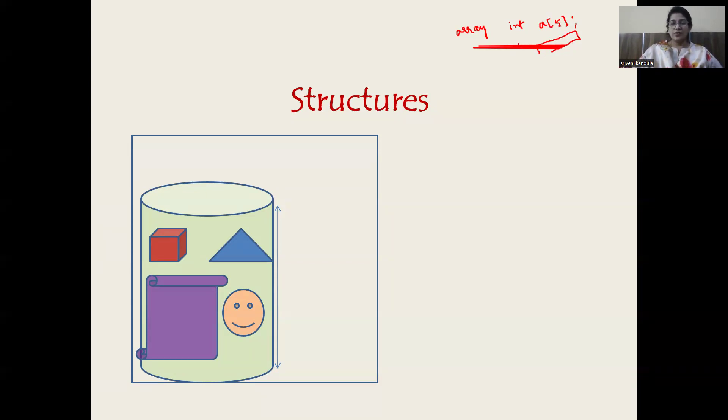They all are different types of data. So is there any possibility to group all these different types of variables under a single name? Is it possible? Yes, it is possible with the help of structures.